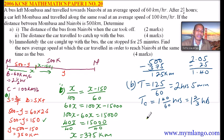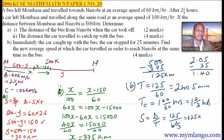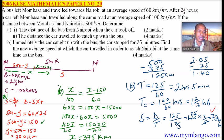Speed equals distance over time: 125 divided by 1 and 2/3. Writing in proper form — 125 divided by 5/3 equals 125 multiplied by 3/5. Simplifying, 25 multiplied by 3 gives 75 kilometers per hour. That is the new speed of the car so that it arrives in Nairobi at the same time as the bus. That is how you work out that question, and if you work it out the way I have shown you, then you have scored 10 marks.